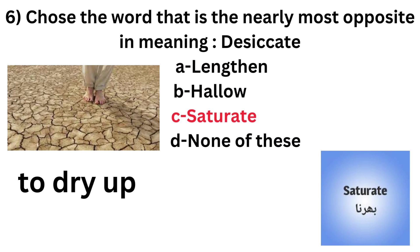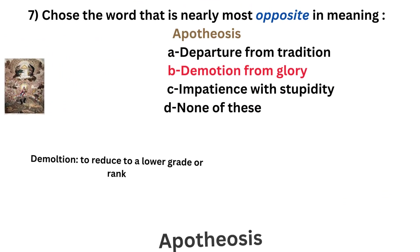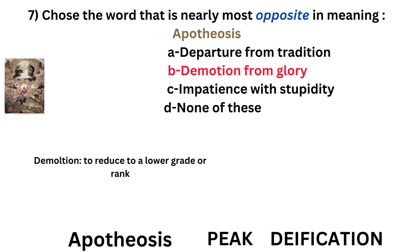The most opposite in meaning of 'desiccate' — desiccate means to dry off, to make arid — so the most opposite of desiccate is to saturate, option C. And the most opposite in meaning to 'apotheosis' — apotheosis means peak or deification.